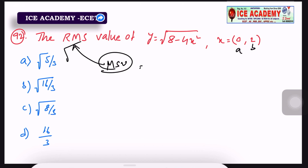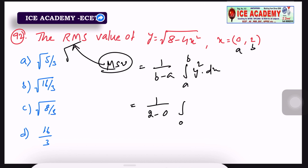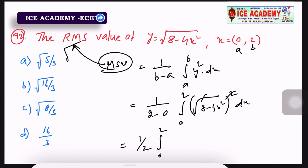The mean square value formula is: (1/(b−a)) · ∫[a to b] y² dx. Here b = 2, a = 0. Substituting y = √(8 − 4x²), y² = 8 − 4x². So the expression becomes (1/2) · ∫[0 to 2] (8 − 4x²) dx.